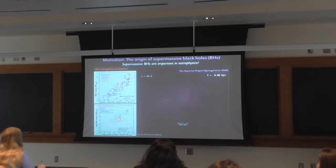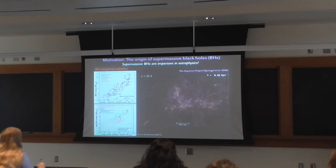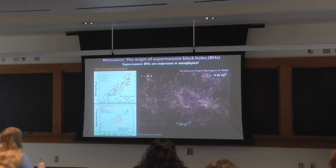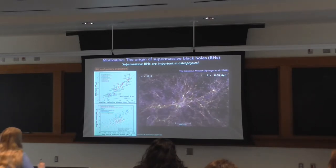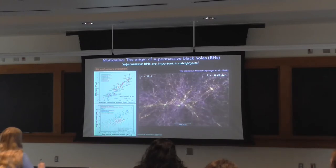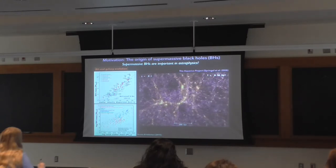This computer simulation shows basically how we think galaxies are built up over time. It only shows dark matter — no gas, star formation, or black holes — but dark matter is the main component of matter in the universe and is important for the gravitational collapse of structures that will ultimately host galaxies. Very early on, small dark matter structures form, and over time they gradually merge, building up ever more massive structures.